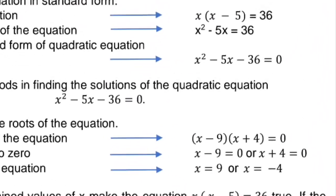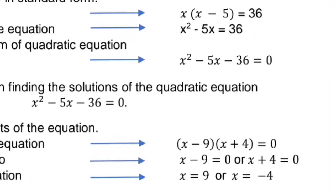Check whether the obtained values of x make the equation x times the quantity of x minus 5 equals 36 true. If x equals 9: 9 times 9 minus 5 gives 9 times 4 equals 36 — correct. If x equals negative 4: negative 4 times negative 4 minus 5 gives negative 4 times negative 9 equals 36 — also correct. The solutions are x equals 9 or x equals negative 4.